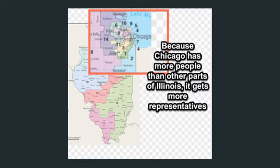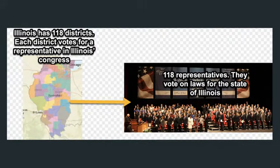Because Chicago has more people — a higher concentration — there are a lot more representatives in just that one area. There is one representative for every hundred thousand people or so. For every about 100,000 people, they make a little section, and then that section gets to vote on a person or representative. So we've got 118 little sections again.